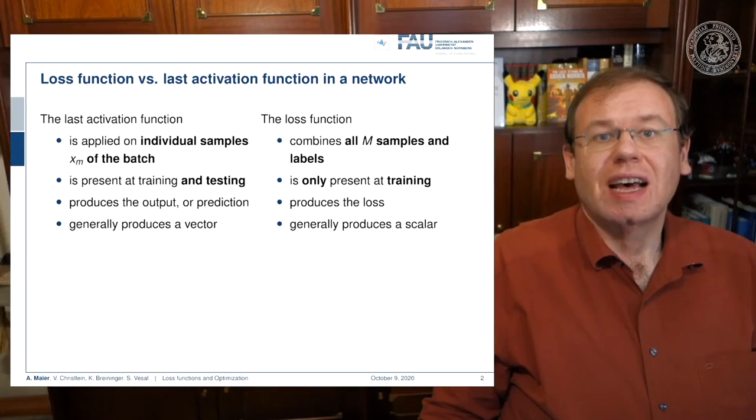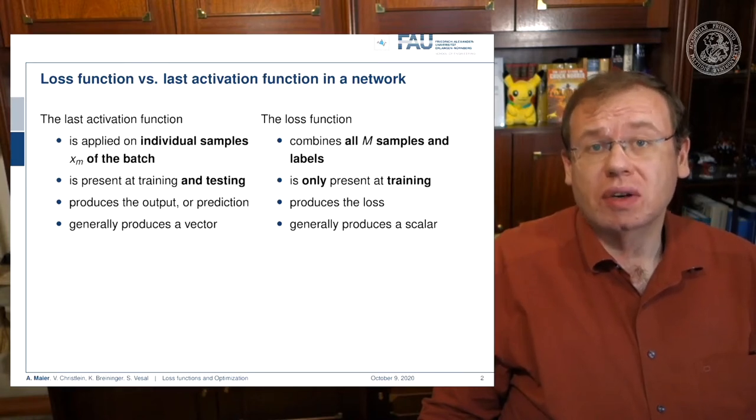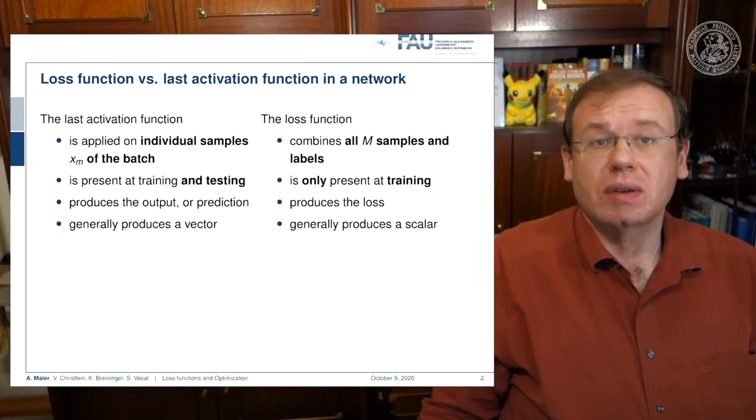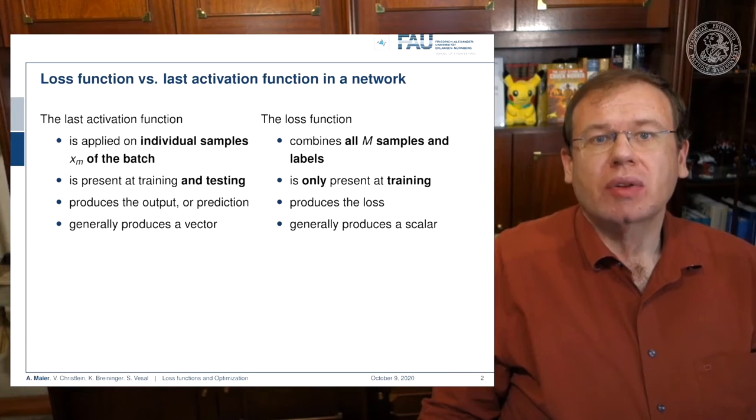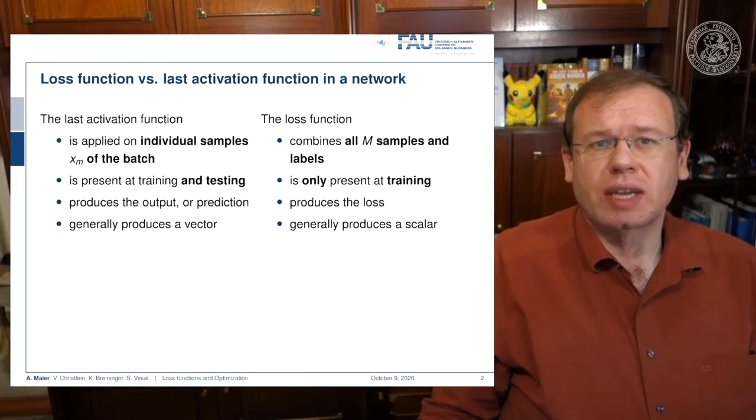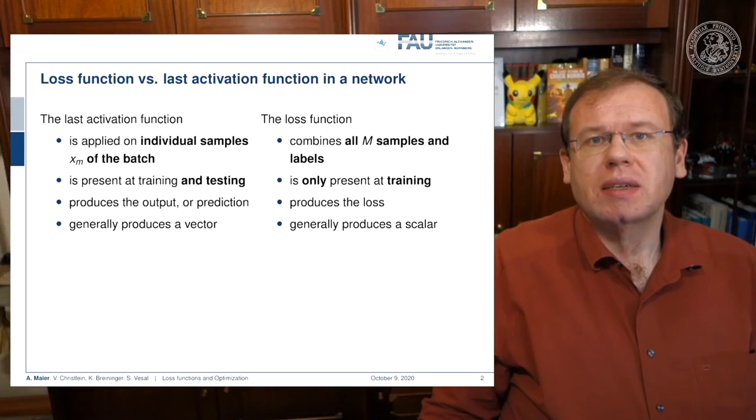We talked about activation functions last time: activation, softmax, and cross-entropy loss. Obviously there's a difference between the last activation function in our network and the loss function. The last activation function is applied to individual samples of the batch and will be present at training and testing time, producing a vector output. The loss function combines all m samples and labels to produce a scalar value describing how good the fit is, only present during training time.